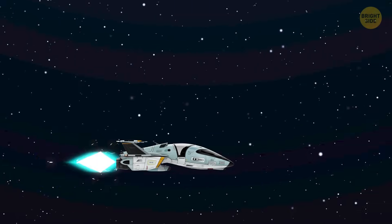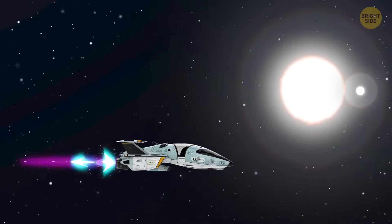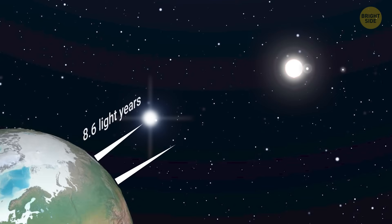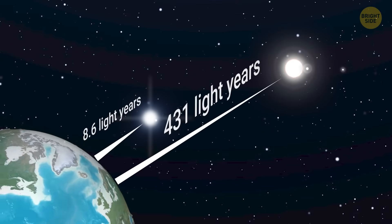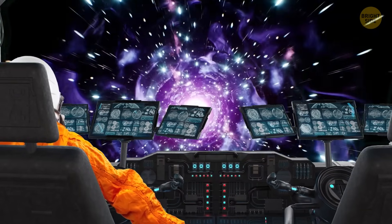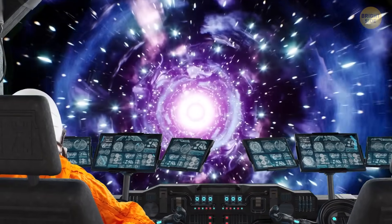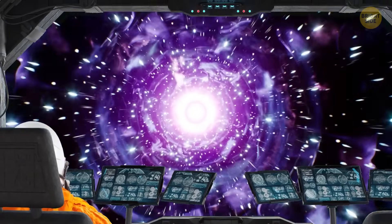But you're traveling fast, and soon you see Polaris, aka the North Star, which is way further, 431 light-years away. Sometimes you manage to spot tiny dots circling these stars. Those are planets.